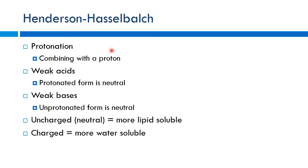Protonation just means when it's combining with a proton — basically picking up a hydrogen ion. With weak acids, the protonated form is going to be the neutral one. When it picks up a hydrogen ion, it's going to be in the neutral form. With weak bases, the unprotonated form — the one that has not picked up a hydrogen ion — tends to be neutral. Uncharged or neutral means more lipid-soluble, and easier to cross membranes.